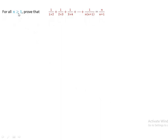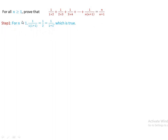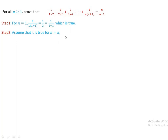Question 3: For all n ≥ 1, prove that 1/(1×2) + 1/(2×3) + 1/(3×4) + ... + 1/[n(n+1)] = n/(n+1). Step 1: For n = 1, 1/(1×2) = 1/2, and substituting n = 1 on the right: 1/(1+1) = 1/2. Therefore 1/2 = 1/2, which is true.